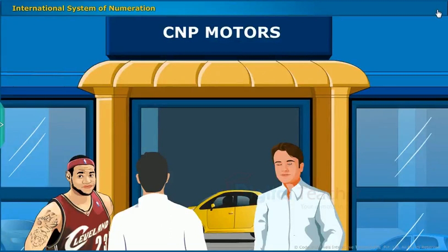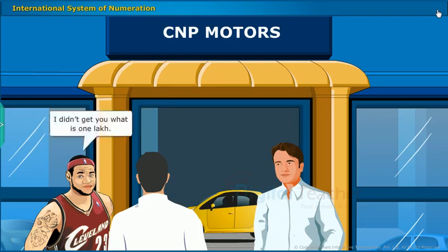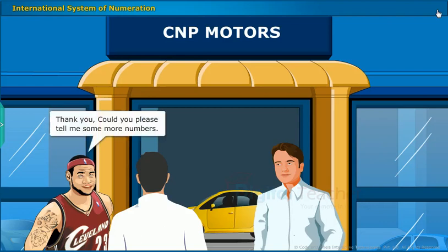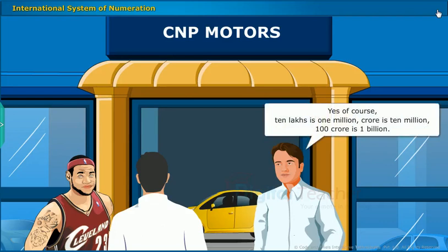What's the price of a car? One lakh. I didn't get you. What is one lakh? Up to ten thousand, the number system is same in all countries. But in India, hundred thousands is called a lakh. Thank you. Could you please tell me some more numbers? Yes, of course. Ten lakhs is one million, crore is ten million, hundred crore is one billion.